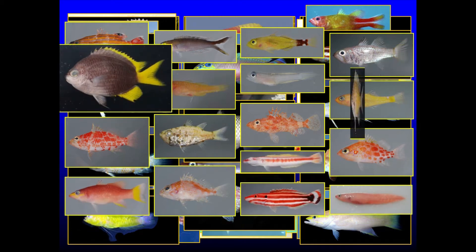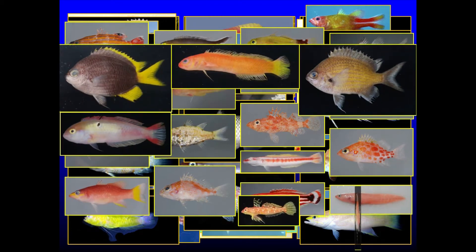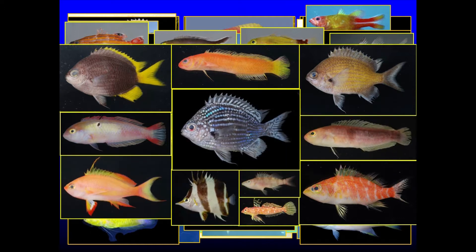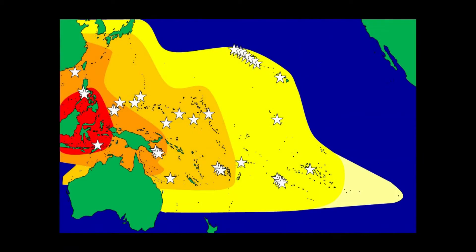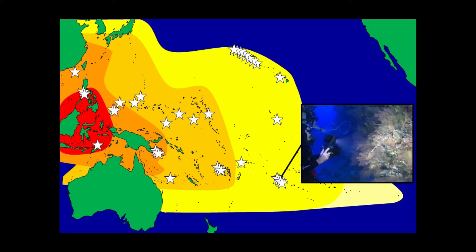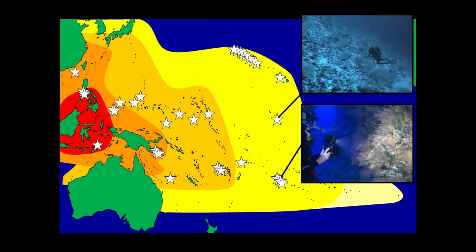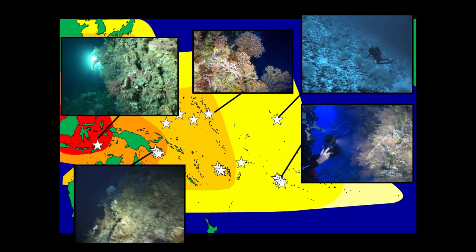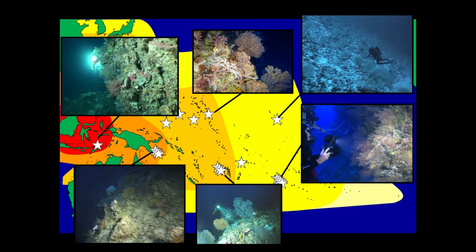For every hour we were spending at that depth, on average we were getting up to 12 new species of fishes. Extraordinary. But actually the most interesting thing we found is that over this vast expanse of the Pacific, most of these mesophotic ecosystems looked remarkably similar and had remarkably similar levels of diversity.